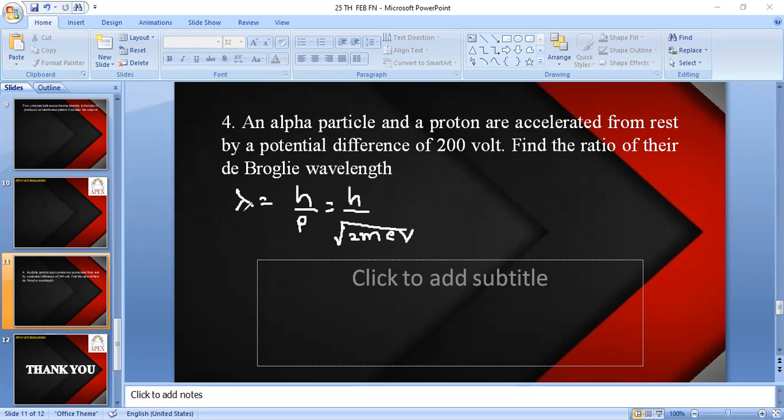They are asking just the ratio of De Broglie wavelength only. So we can write the formula lambda is proportional to 1 by root over h remains constant. We can remove the constants and 2, so it's 1 by root over m into e into potential difference.